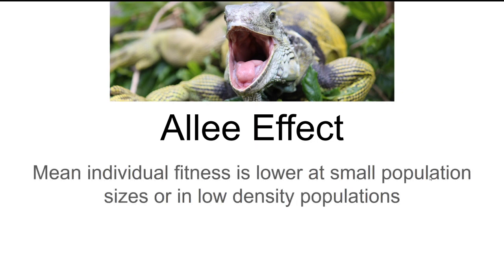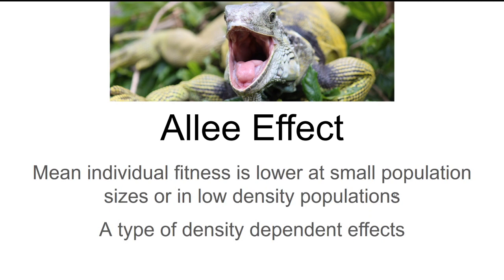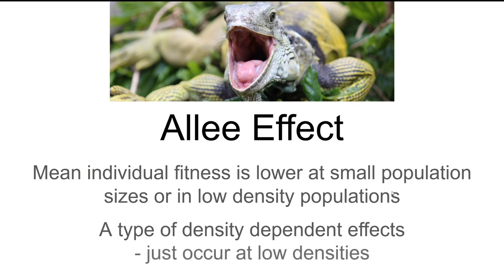The Allee effect is a situation where the mean individual fitness is lower at small population sizes or in low-density populations than what we would expect otherwise. This is one type of density-dependent effect. A lot of times when we think about density-dependent effects, we think about things like starvation and crowding. But this is what happens when density gets too low to support good population growth — it really occurs at lower densities.